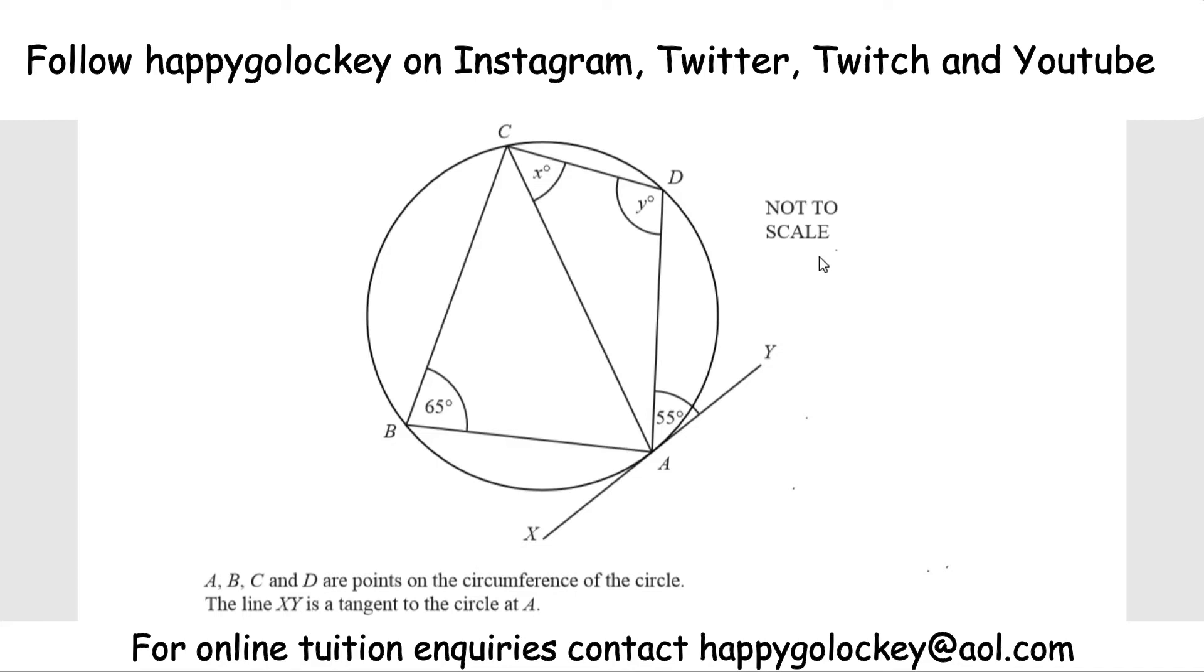This question's all about circle theorem, so as long as you know them you'll be fine, but there's four marks available, one for giving the missing angle and then one for giving the reasons. So the question goes: A, B, C and D are points on the circumference of the circle. The line XY is a tangent to the circle at A, and our job is to find the value of X and then find the value of Y, given reasons for both your answers.